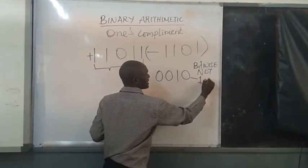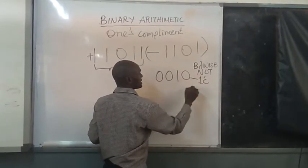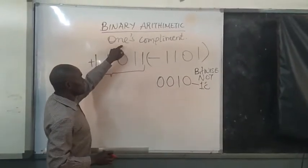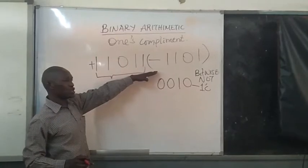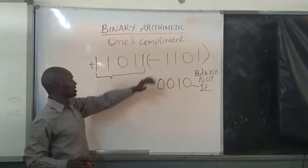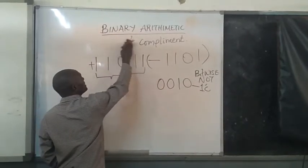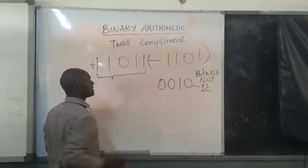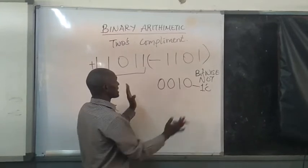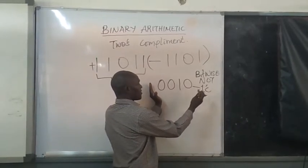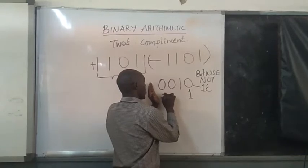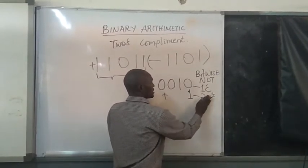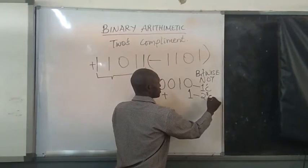So this is now the complementation that we are talking about — this is the one's complement. But if we need to further continue working with these values using the two's complement, what will happen is we take the negative part of that value and we add a one. So this is now what we refer to as the two's complement.